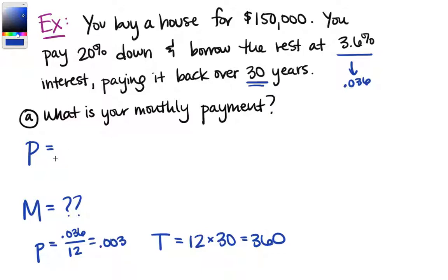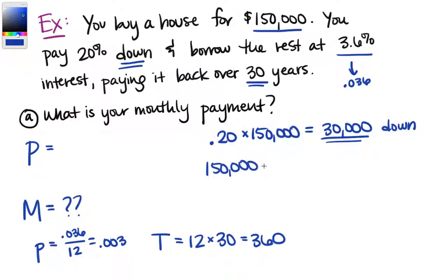And the principal here, there's a little extra work to do. You might want to say that the principal is just $150,000, but you're not borrowing the full price. A down payment means you're paying part of that price just out of your pocket, out of your bank account, and then we're going to borrow the rest. So we're paying 20% of the price down. So 20% as a decimal is 0.20, and of means multiply. So 20% of $150,000 is $30,000 that we pay down. So we only borrow what's left, which is $150,000 minus $30,000 or $120,000.